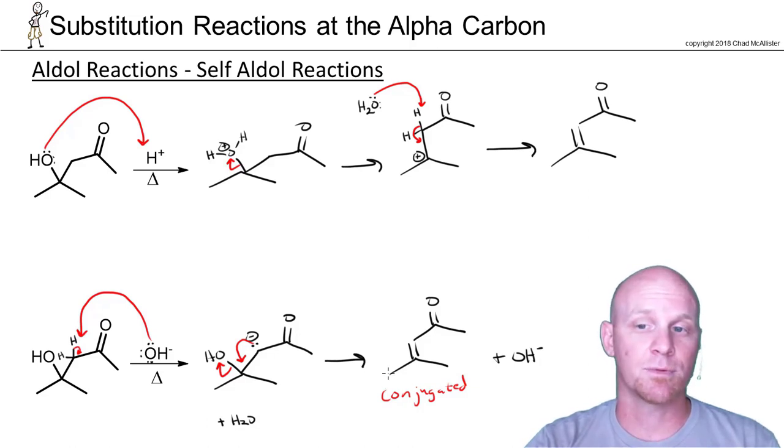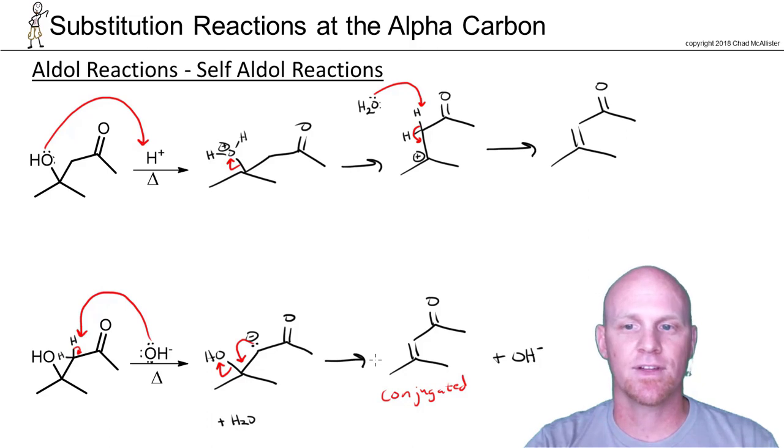If we weren't forming such a stable product, you definitely wouldn't have an OH leaving group leaving. That's the condensation step, both acid-catalyzed and base-catalyzed. It can happen either way. You're responsible in all likelihood for both mechanisms.